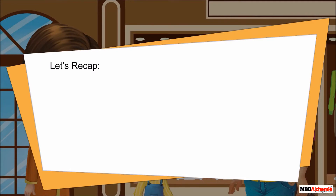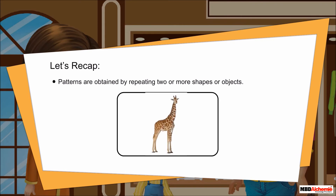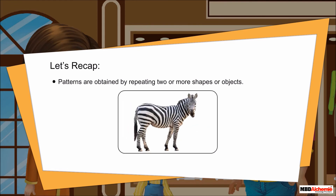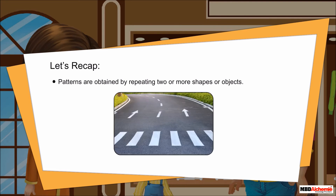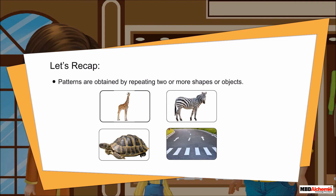Let us recap. Patterns are obtained by repeating two or more shapes or objects. We have various examples of patterns around us — for example, in animals like a giraffe and a zebra. Patterns are also formed by repetition of leaves, on zebra crossings, and so on.